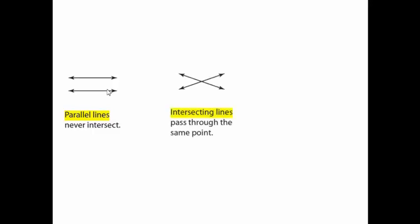If the lines come together and attach in one point, or touch each other like this, they are intersecting lines. The second type is intersecting lines.